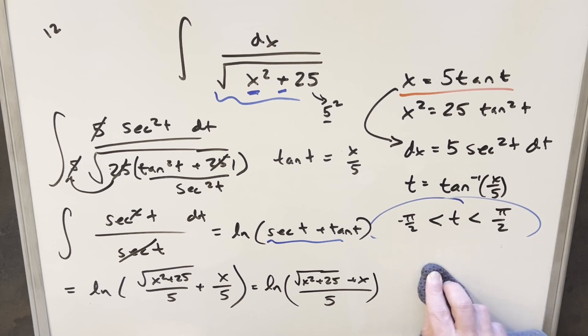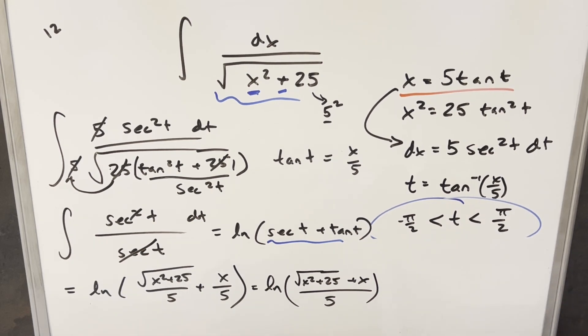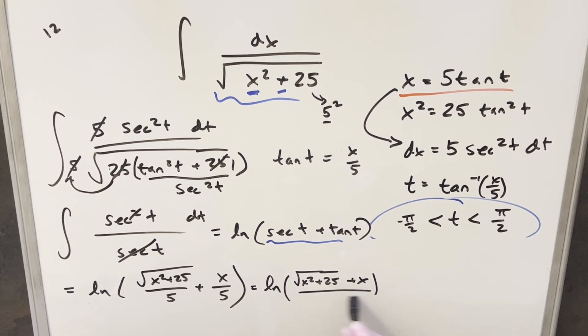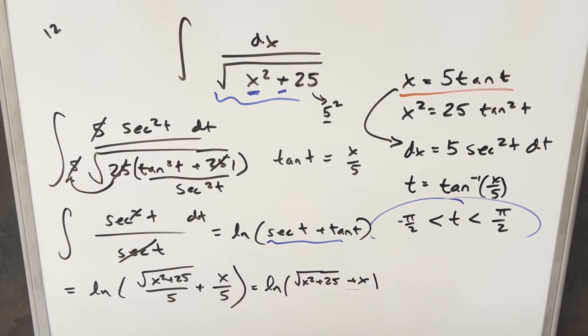But then what I can do if I just erase and make a little more space, we can just use log properties on this. So the 5, we can turn this into a subtraction. And I can write this as like minus natural log of 5.